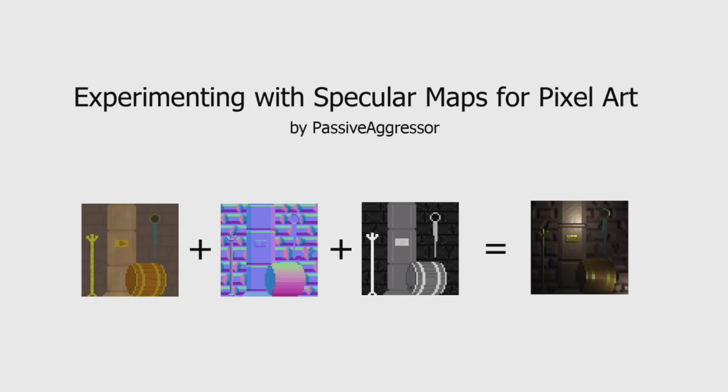Hi and welcome to my experimenting with specular maps for pixel art. Pixel art is a unique graphic style that's currently quite popular. There are a few games that have pushed pixel art to a new level by adding normal maps to a varying degree of success. An example of doing this well is the Siege and the Sandfox game. My next video tutorial will be on creating normal maps for pixel art, but what I want to show you here is the result of a little experiment.